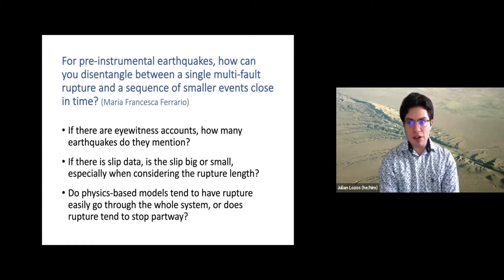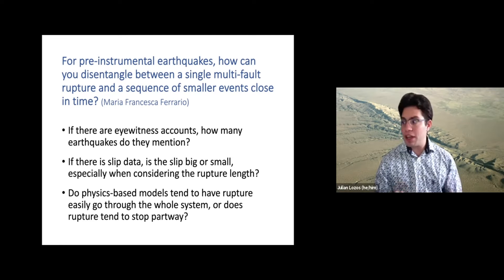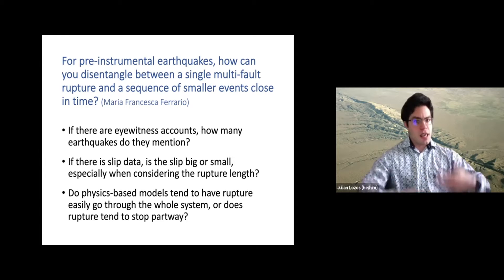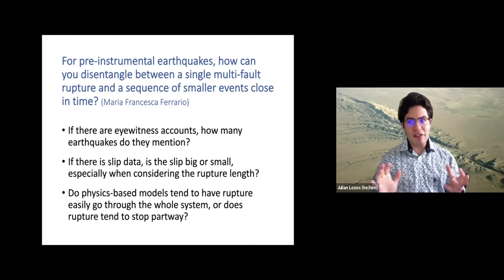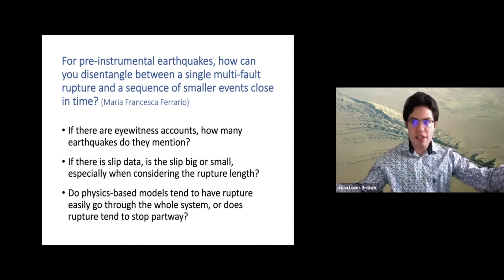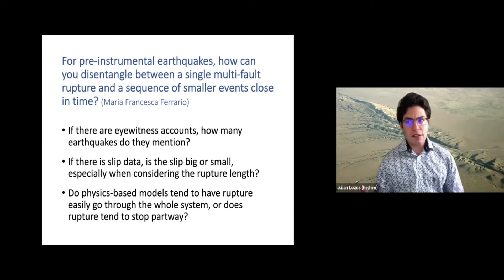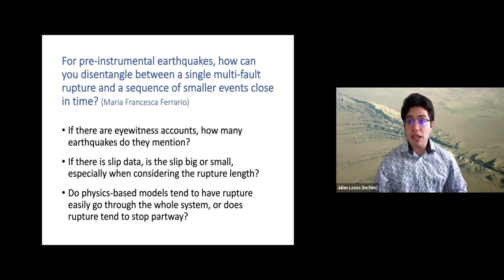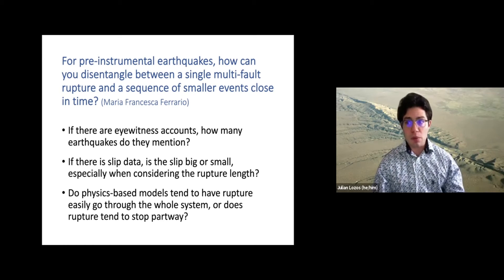Another approach is looking at the fault itself. If there's a geometrical discontinuity or some other sort of barrier to rupture, it might be worth thinking about as a possible set of multiple events rather than a single larger event. But this is also a place where slip data is really useful. If there's a relatively low amount of slip over a relatively long rupture area, that might make me wonder if this is a sequence of events. But if it's a long rupture with a really big amount of slip in the middle, my inclination would be that it's more likely a continuous rupture, since it has to be going for a while to make a really huge amount of slip.